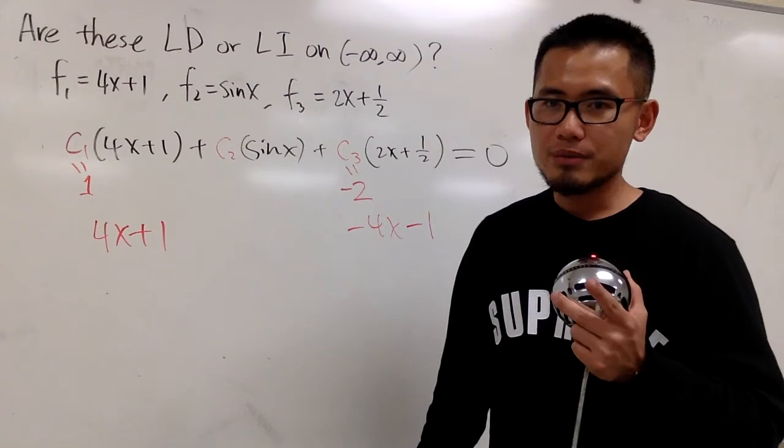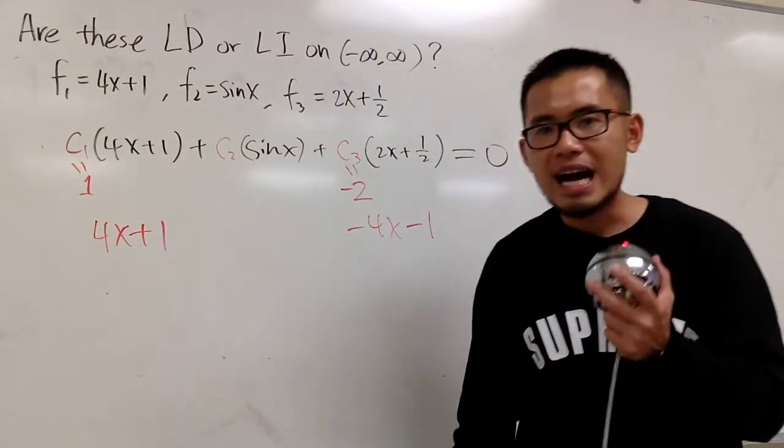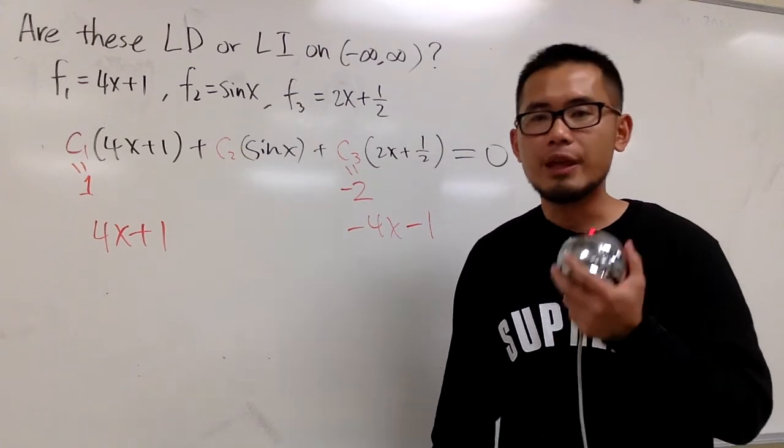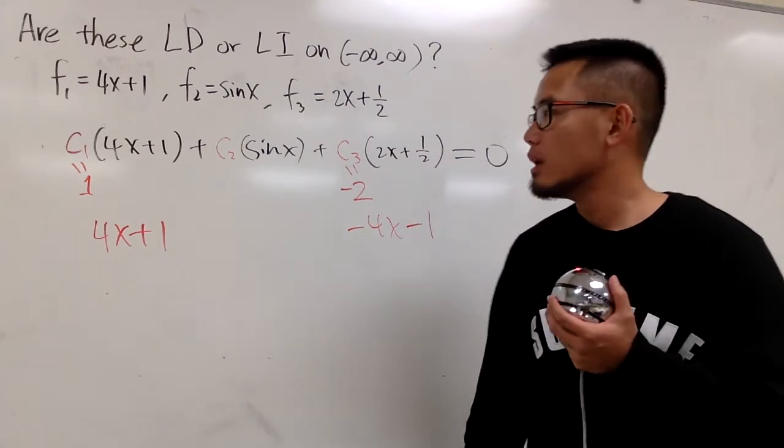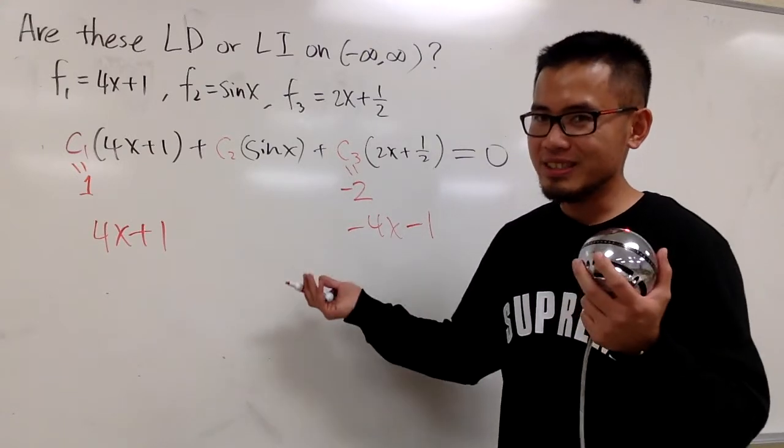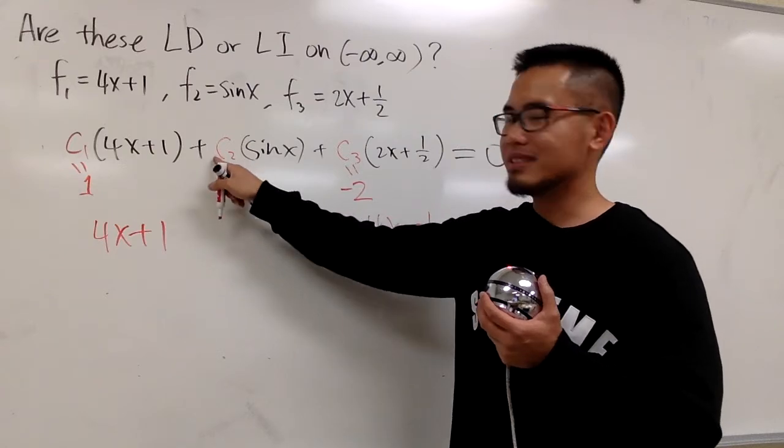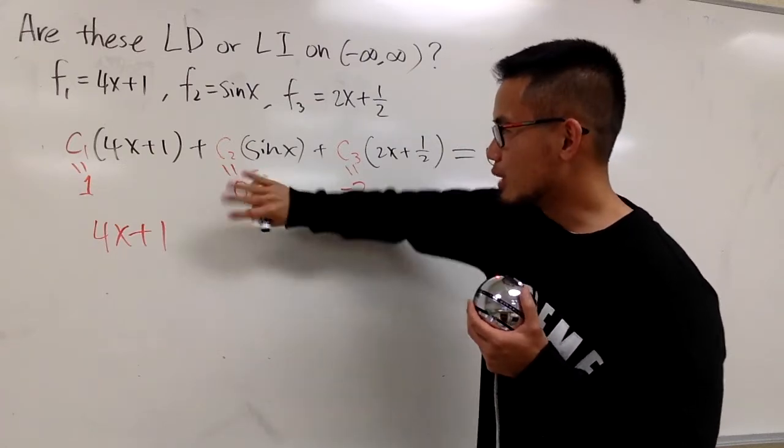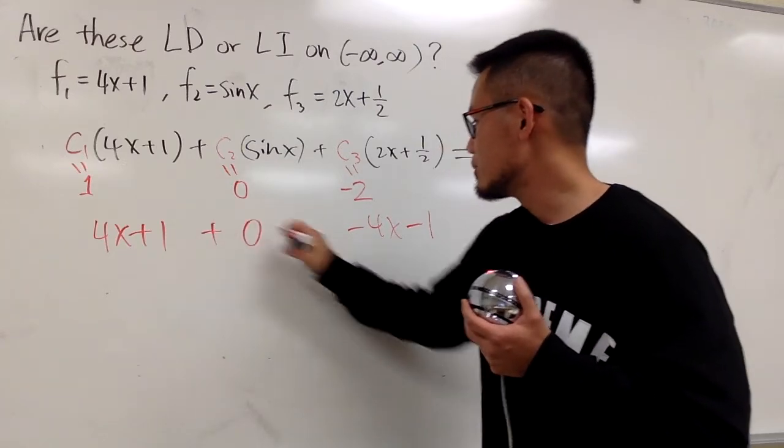Well, remember the definition. As long as you can find c1, c2, c3, not all 0, then you can show that the functions are LD, alright? But sometimes one of the c's can be 0. And that's the situation here. I will just purposely pick c2 to be 0, so we don't have the sine function to worry about at all. So in the middle, put on plus 0 and all that.